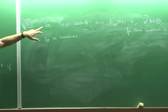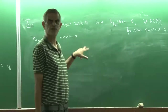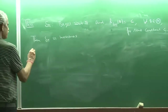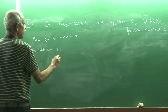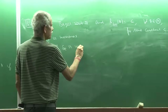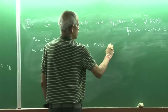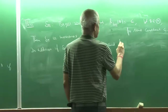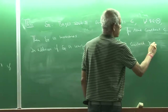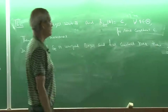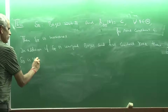In addition, if delta_pi is a unique Bayes estimator and has a constant risk, then delta_pi is unique Minimax. So there is only one Minimax estimator in that case.